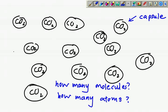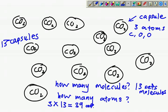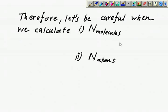Then my next question is how many atoms? Look, inside each capsule has 3 atoms. How do I get 3 atoms? C-O-O. So I have 3 atoms. How many molecules? 13 sets of molecules. But as for how many atoms, I would have 3 times 13, so I get 39 atoms. This principle is extended to this.